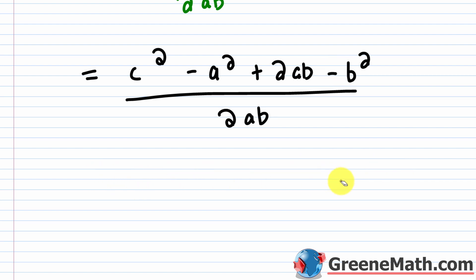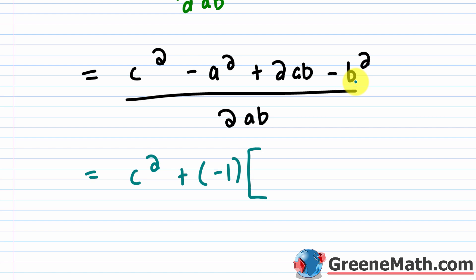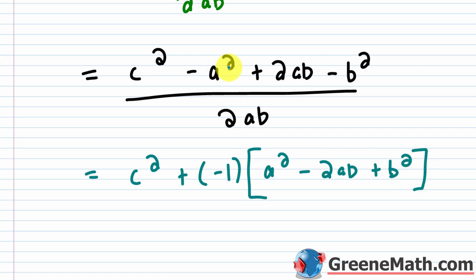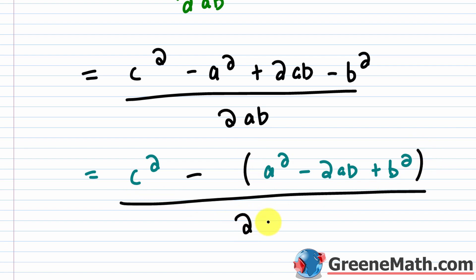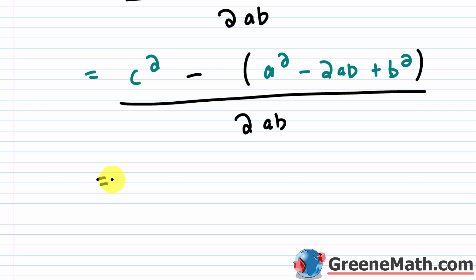Factoring out negative one carefully: the numerator becomes C squared plus negative one times the quantity A squared minus 2AB plus B squared. Distributing the negative one changes each sign, recovering the perfect square. So the numerator is C squared minus the quantity A minus B squared. Therefore 1 minus cosine C equals C squared minus the quantity A minus B squared, all over 2AB.